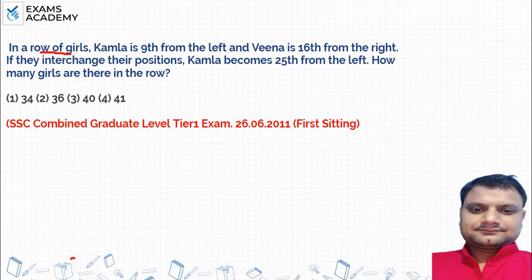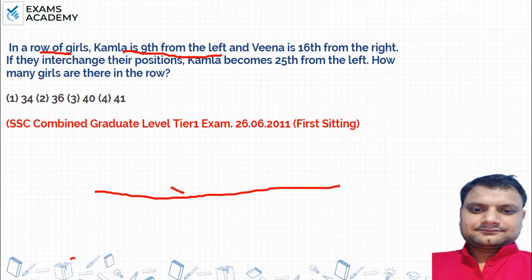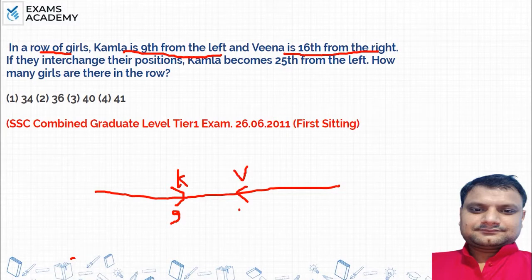In a row of girls, Kamala is 9th from the left side and Veena is 16th from the right hand side.